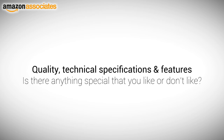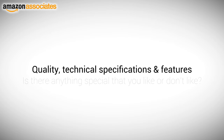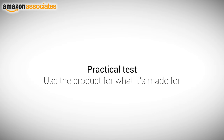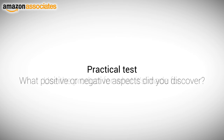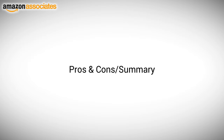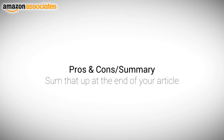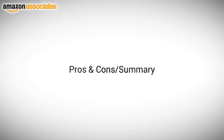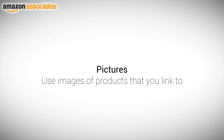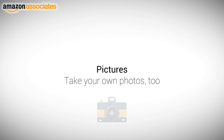Is there anything special that you like or don't like about the product? Practical test — use the product for what it's made for. Does it keep the marketing promises of the manufacturer? What positive or negative aspects did you discover when using the product? Pros and cons summary — it's very important to sum up the pros and cons of the product and write a short summary at the end of your article. Pictures can bring big value to your visitors. On some affiliate programs you can use the images of products that you link to, but it's good to take your own photos too. You don't have to be a professional photographer — it's much more important that your visitors get an honest impression of the product that you review.